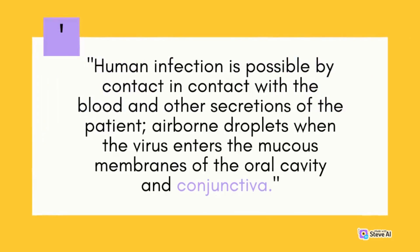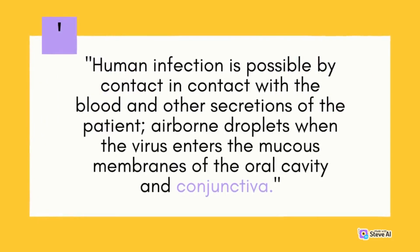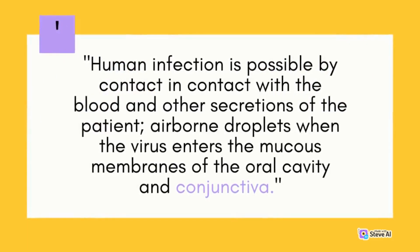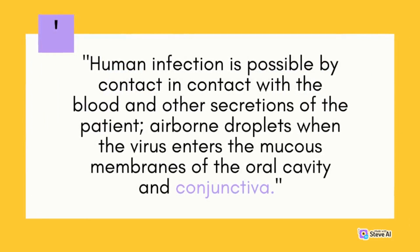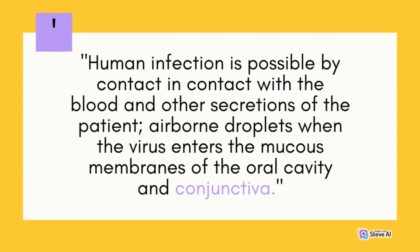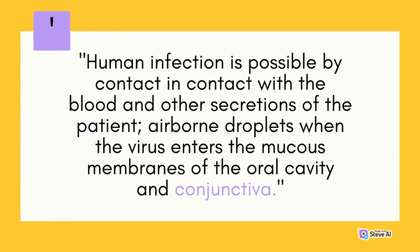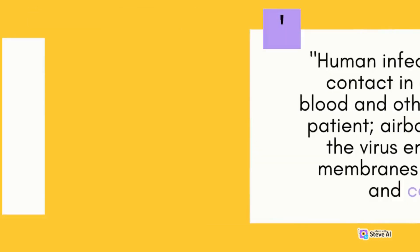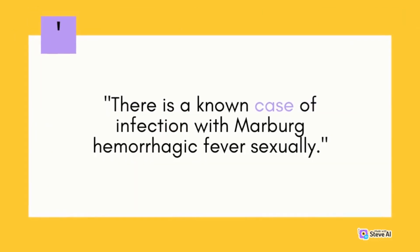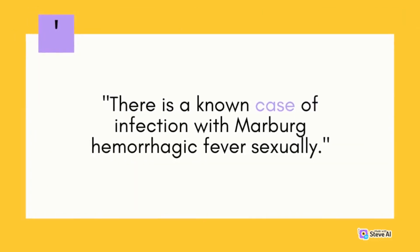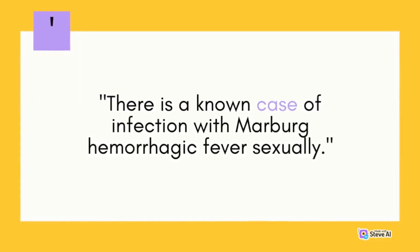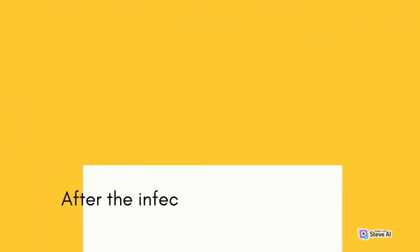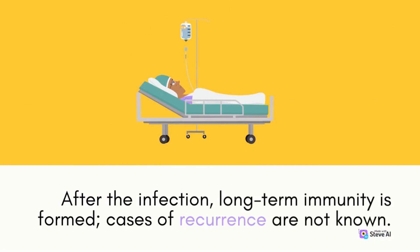Human infection is possible by contact with the blood and other secretions of the patient, or by airborne droplets when the virus enters the mucous membranes of the oral cavity and conjunctiva. There is also a known case of sexual transmission. After infection, long-term immunity is formed and cases of recurrence are not known.